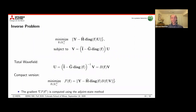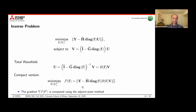One approach is variable projection, where the total wave field is given by u = (I − G diag(f))⁻¹ v, represented by an operator B(f) applied to the incident wave field. We then solve this nonlinear least squares problem defined by the objective F. One way to find a stationary point is gradient descent, where the gradient is given by the adjoint state method — a well-established approach in the literature.